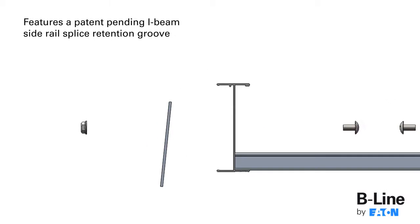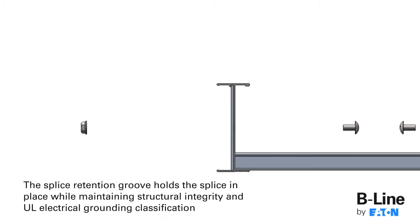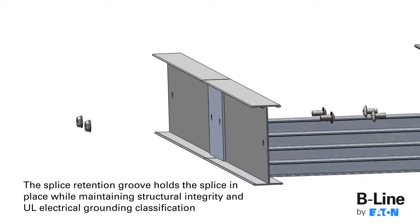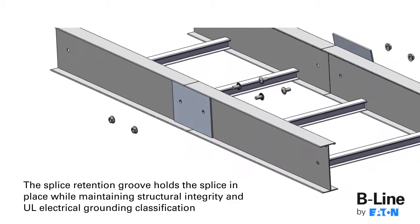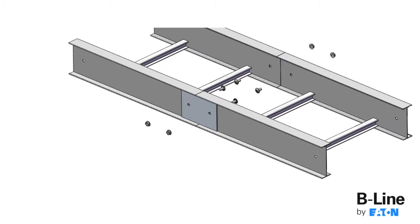The system's patented I-beam side rail splice retention groove allows installers to easily guide and snap the splice plate into position with only two bolts. The splice retention groove holds the splice in place while maintaining structural integrity and UL electrical grounding classification.